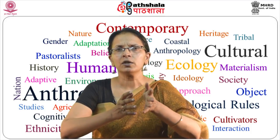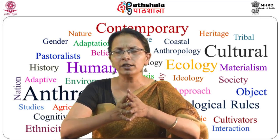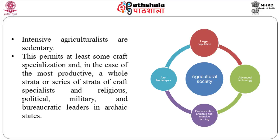Agricultural production typically is concentrated on a single crop. Population size, birth rates and population densities are all higher than those of horticultural societies, and intensive agriculturists are sedentary. Their farming yields a surplus beyond what is needed to feed those who do the work, permitting the emergence of craft specialization and, in the most productive cases, a whole strata of craft specialists and religious, political, military and bureaucratic leaders in archaic states. Despite its productivity, the narrowing of diet under intensive agriculture and increasing social inequality may result in deficiency diseases and poorer health.